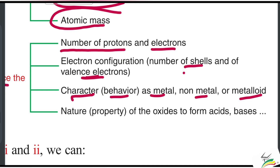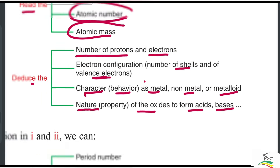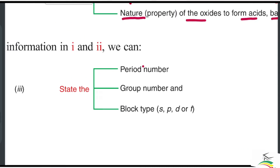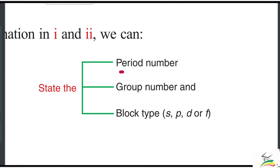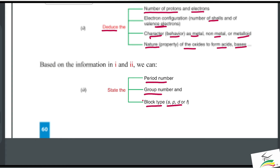We can also deduce the electron configuration, number of electrons, and valence electrons. From these, we can deduce the character and behavior of the element — whether it is a metal — and the nature of its oxides, whether acidic, basic, or amphoteric. Additionally, we can deduce the period number, group number, and block type — s block or p block.